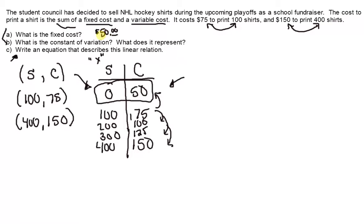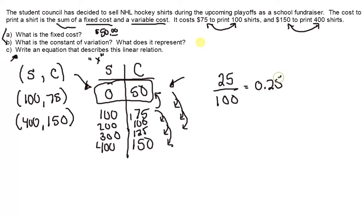No matter what, they have to pay $50, even if they don't sell any shirts. The constant of variation: it goes up by $25 for every 100 shirts that they sell, so that's $0.25 per shirt. It represents that it costs $0.25 per shirt that they sell.